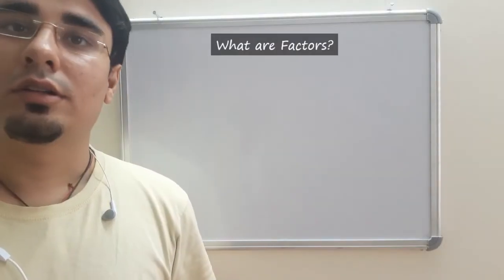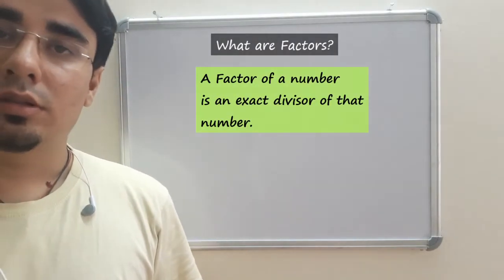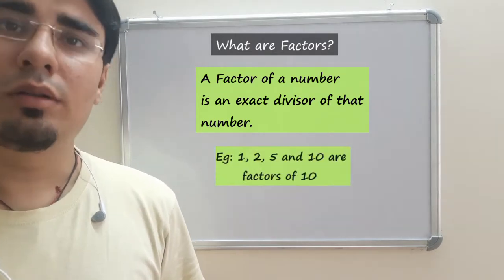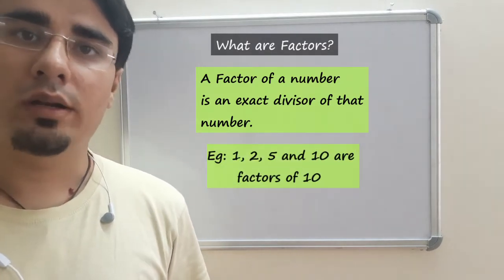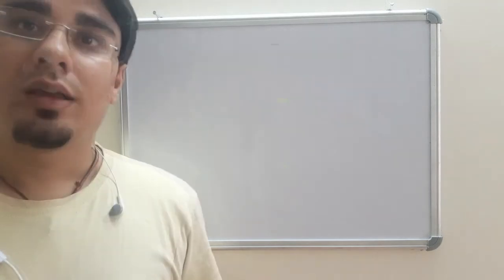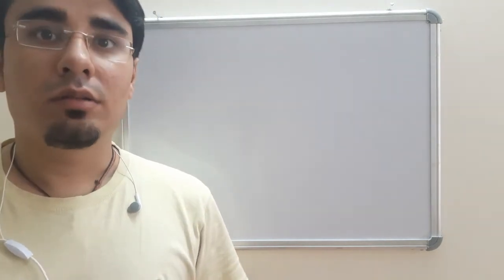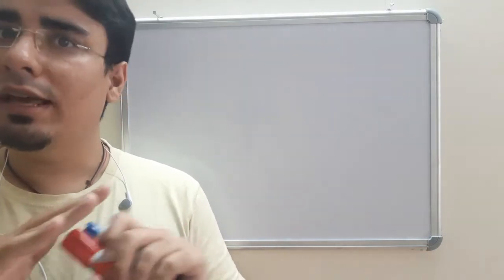Let us start with factors. Factors are the numbers which exactly divide another number. For example, factors of 10 are 1, 2, 5 and 10. That means they can completely divide the number 10 without leaving any remainder.